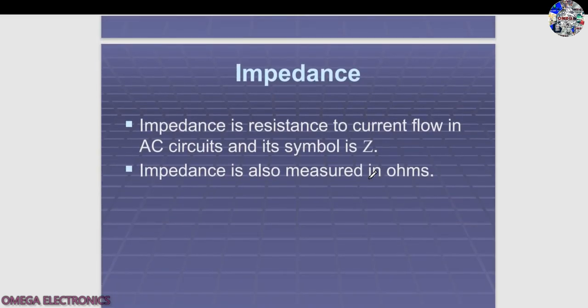Impedance is resistance to current flow in AC circuits, and its symbol is Z. Impedance is also measured in ohms.